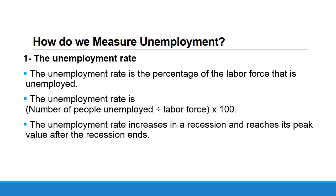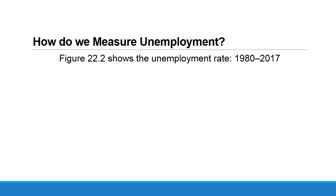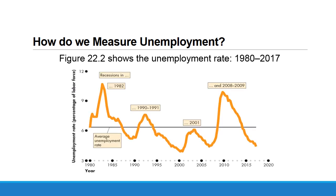The unemployment rate fluctuates over the business cycle — it increases in a recession and reaches its peak value after the recession ends. Looking at the unemployment rate in the United States during 1980–2017, we find that sometimes the unemployment rate rises above average — during recessions like 1982, 1990–1991, and 2008–2009 — and other times it falls below average during expansions.